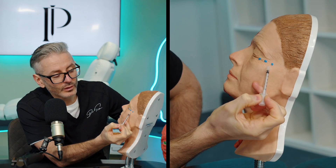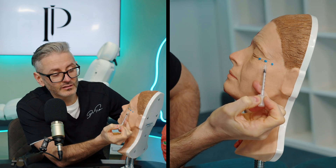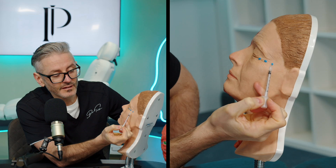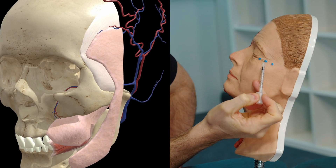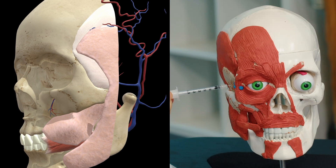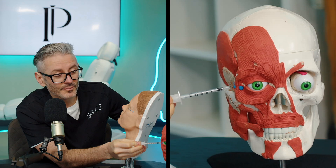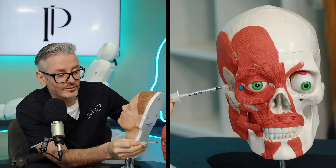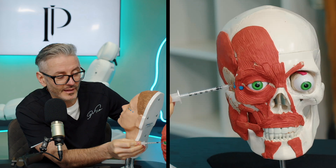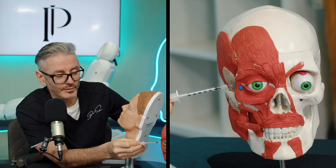Once you go more lateral, which often new injectors do in order to be safer, you end up basically missing the muscle and injecting somewhere over the temporalis muscle. This is really going to do almost nothing for your patient, perhaps a small amount of atrophy of that muscle if you were to inject deep enough.